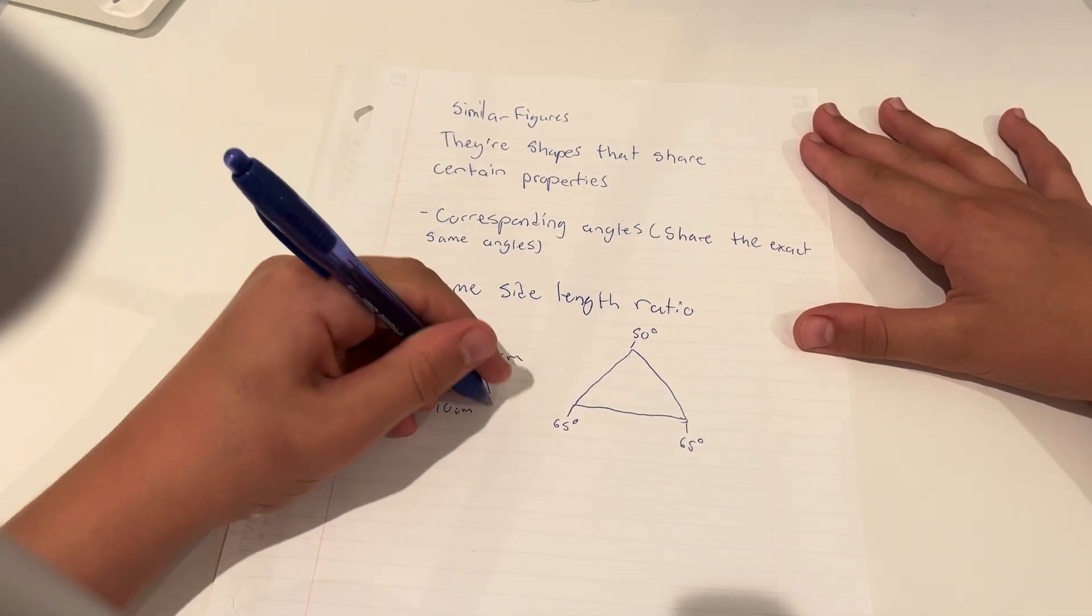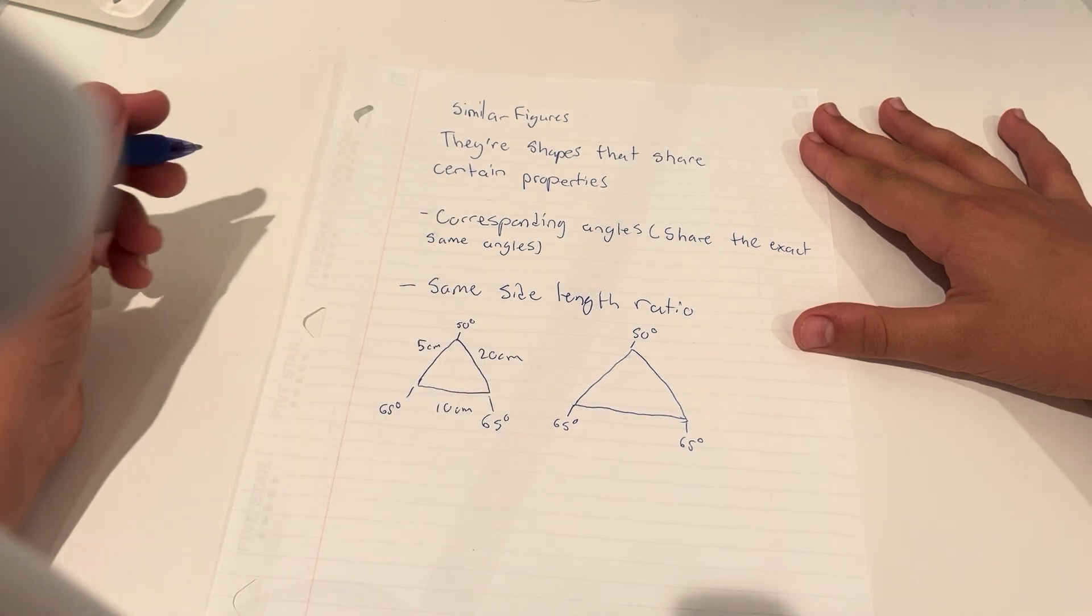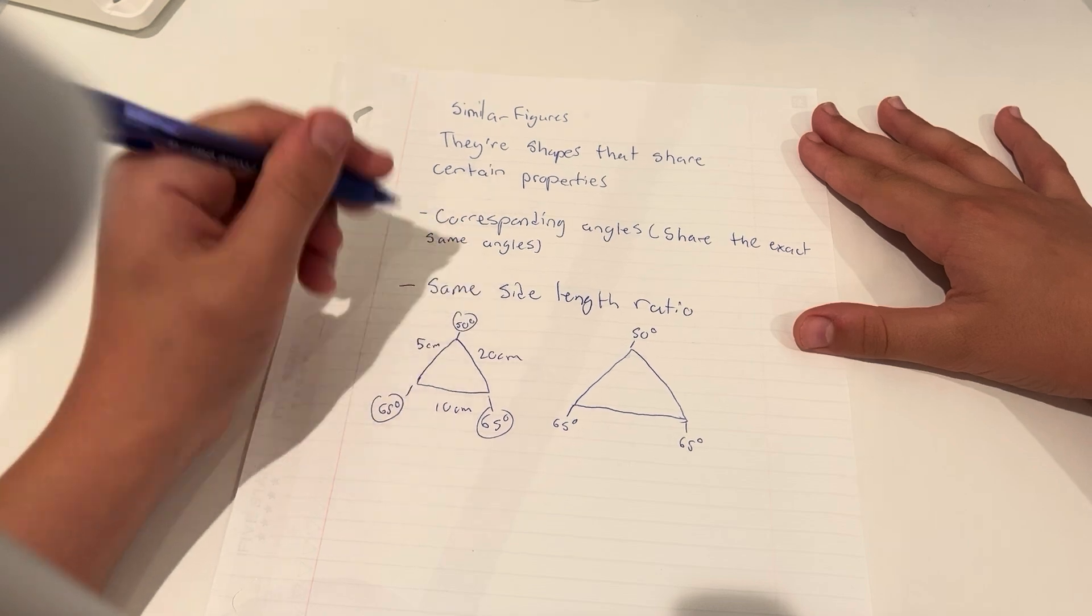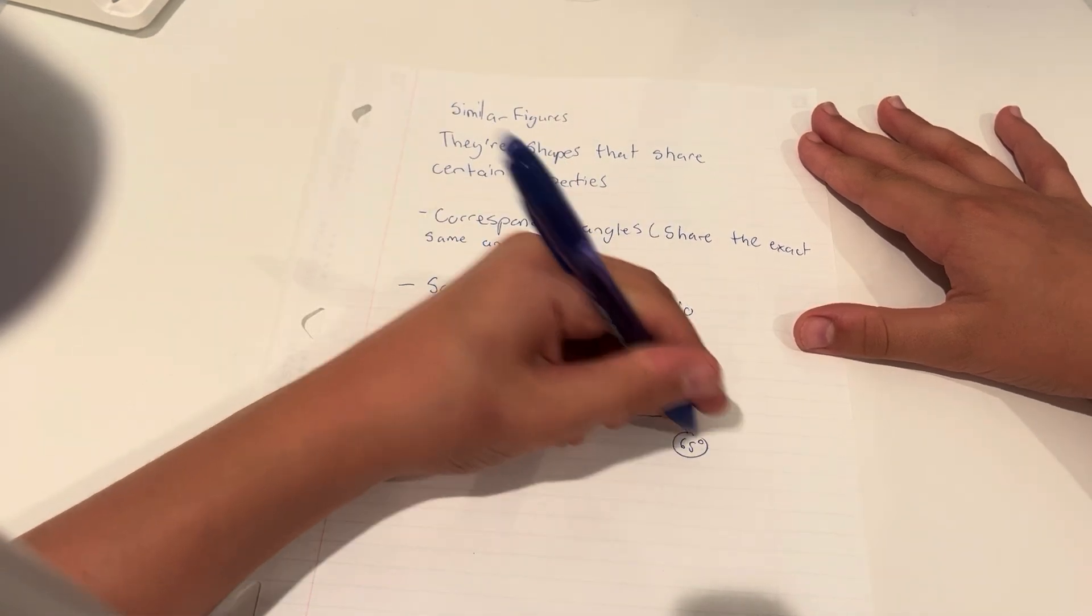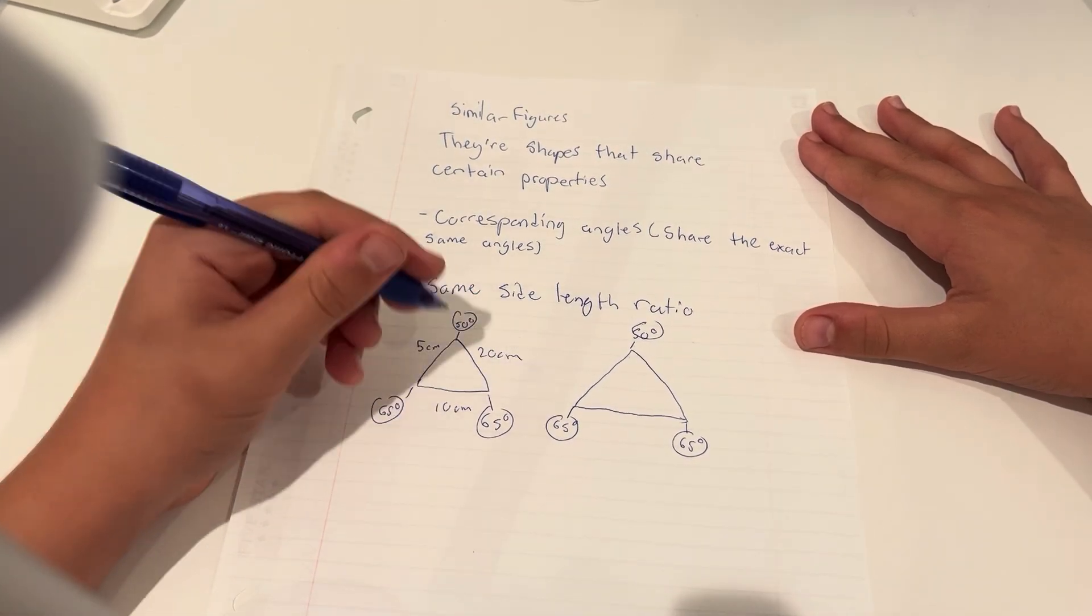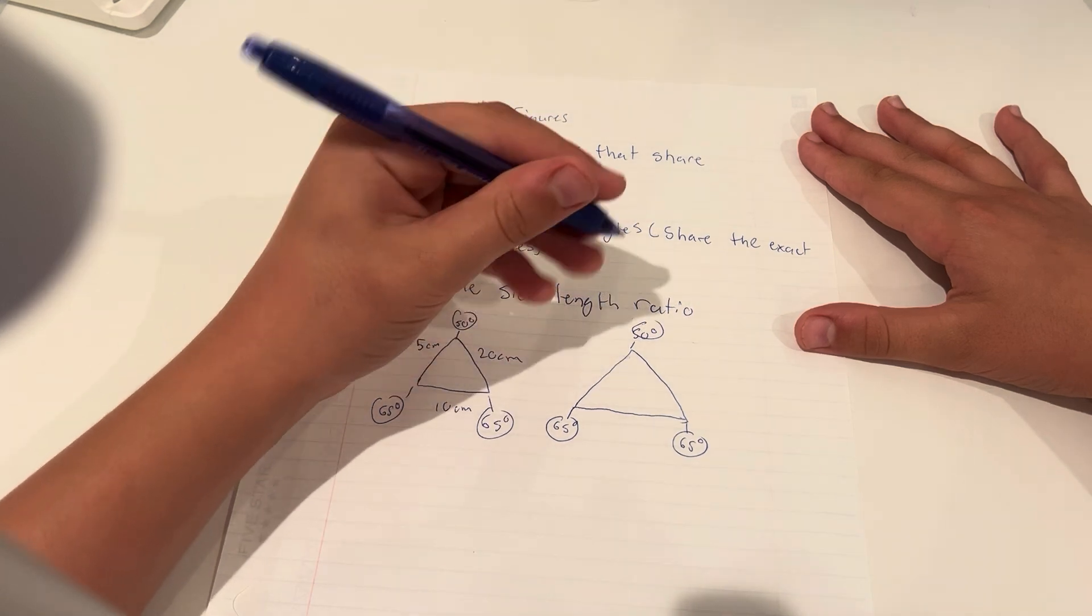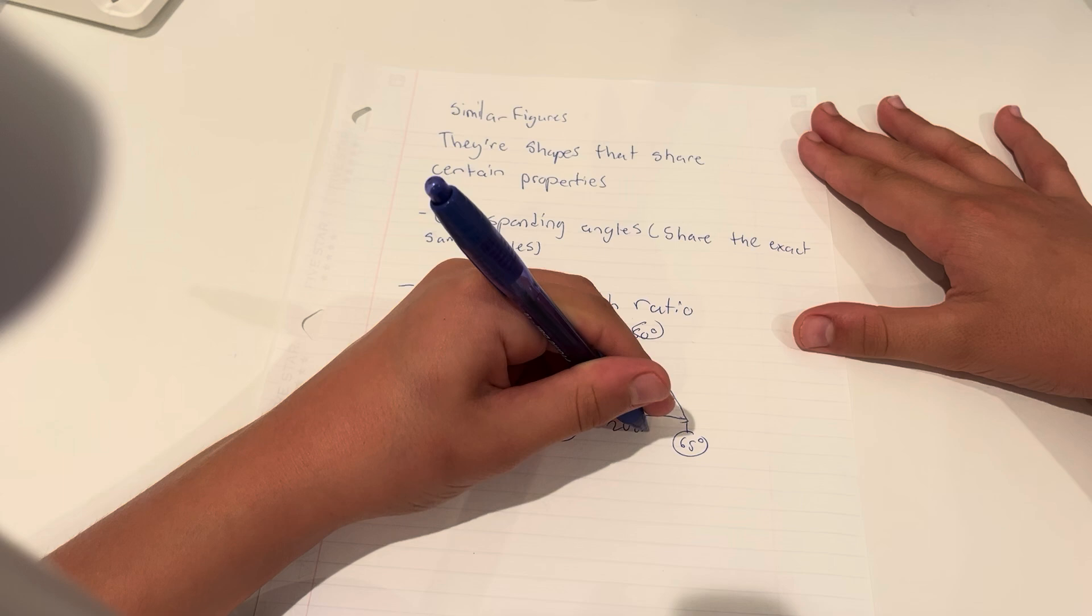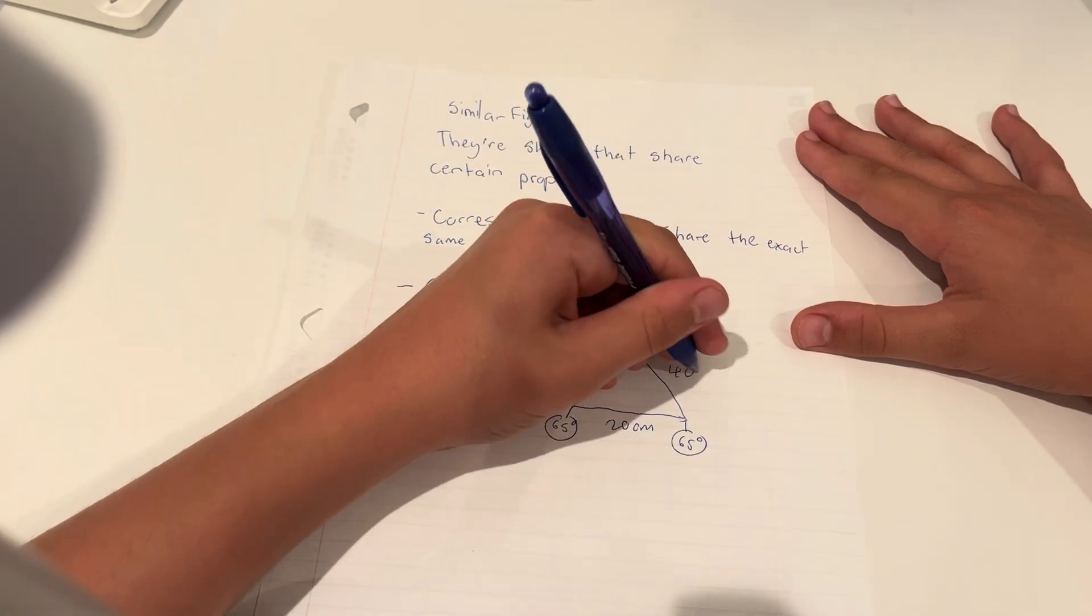And now the side lengths need to have the same ratio, which means that if this is 5 centimeters right here, and this is 10, and this is 20, and this is twice as big, this needs to be 10 centimeters. This needs to be 20 centimeters, and this needs to be 40 centimeters.